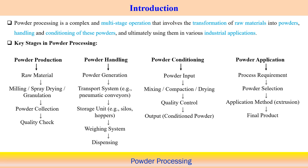For powder production, we collect raw materials and follow different techniques such as milling, spray drying, and granulation — all of which can be utilized to form powders from raw materials. We perform powder collection following this methodology and then check quality to verify whether proper quality is maintained.